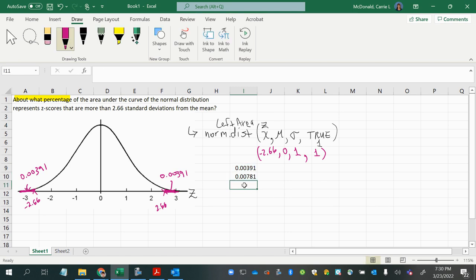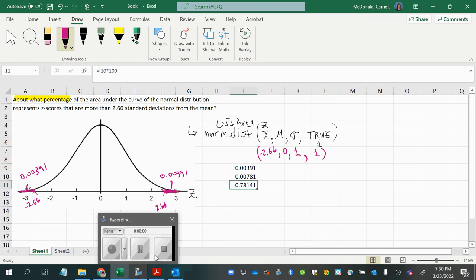And then we want to turn this into a percentage, since we were asked what percentage, rather than what's the probability. So, to turn this into a percentage, we can multiply it by 100. And then we see that we have an answer 0.78141. And then we want to just make sure that we round it appropriately as needed. Make sure you're reading the directions of the question very closely. And that's it. Hope you enjoyed it, and it was helpful for you.